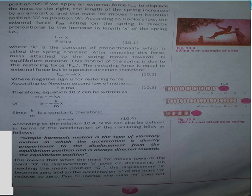ابتدا میں mass m وسطی position zero پر rest میں ہے اور اس پر resultant force صفر ہے۔ اگر mass کو displacement x تک کھینچ کر انتہائی position A پر لاکر چھوڑ دیا جائے تو spring کی restoring force کی وجہ سے mass وسطی position zero کی طرف motion کرے گا۔ Restoring force کی مقدار وسطی position سے قریب ہونے پر کم ہو جاتی ہے اور وسطی مقام zero پر صفر ہو جاتی ہے۔ تاہم mass کی speed بڑھنا شروع ہو جاتی ہے اور position zero پر اس کی speed زیادہ سے زیادہ ہوتی ہے۔ Inertia کی وجہ سے mass وسطی position پر نہیں ٹھیرتا بلکہ اپنی motion انتہائی position B تک جاری رکھتا ہے۔